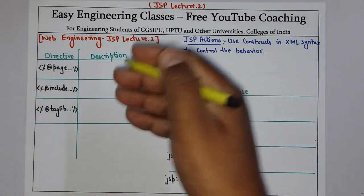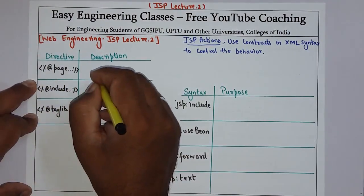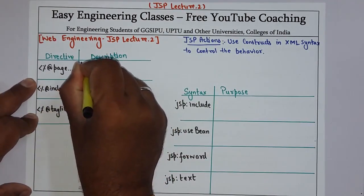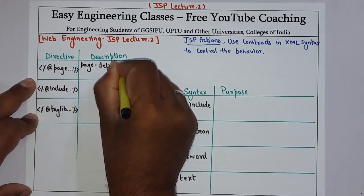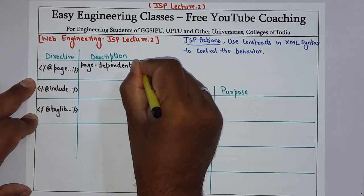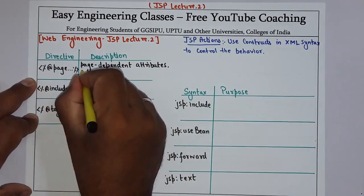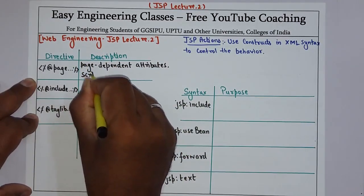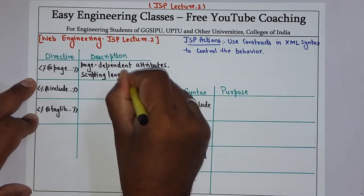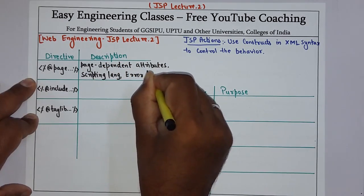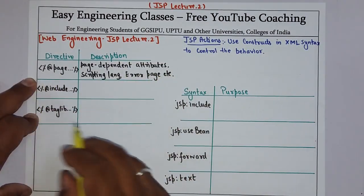These are some of the directives and their descriptions. If we have a directive like at-the-rate page, that means we are defining page-dependent attributes. These attributes can be any scripting language that we need to use, or we are specifying an error page. Those kinds of attributes are defined in this page directive.